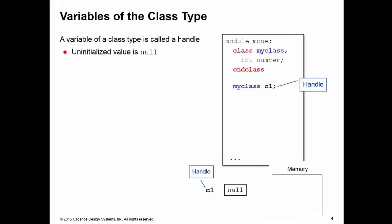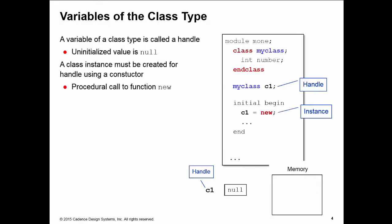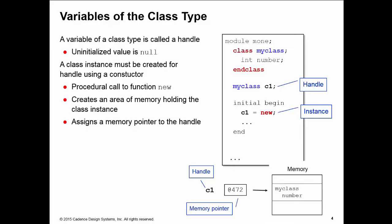To use the variable we need to create a class instance for that handle, and we do that by calling the constructor of the class, a function called new. You make a procedural call to the function new and this creates an instance of the class in memory, returns a pointer to that instance, and stores it in the handle of your class.